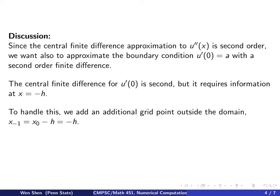A standard way to handle this is to add an additional grid point outside the domain. We call this x_{-1}, which is x0 - h = -h. Since this point doesn't really exist, it's not part of the domain, it's just set up for convenience. We call such a point a ghost boundary.